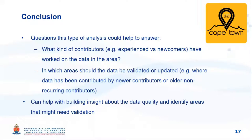What kind of questions could this type of analysis help us answer? It could give us information about the progression of OSM data in an area — for example, what kind of contributors have worked on specific OSM features: newcomers or experienced contributors? This could help identify areas that might need to be validated or updated, and help identify stale data where, for example, the last known contributor was a non-recurring contributor who has not been active for a long time. In conclusion, the results show how one can gain a better understanding of the contributing community by inspecting history data, building insight about data quality and identifying areas that might need data validation.